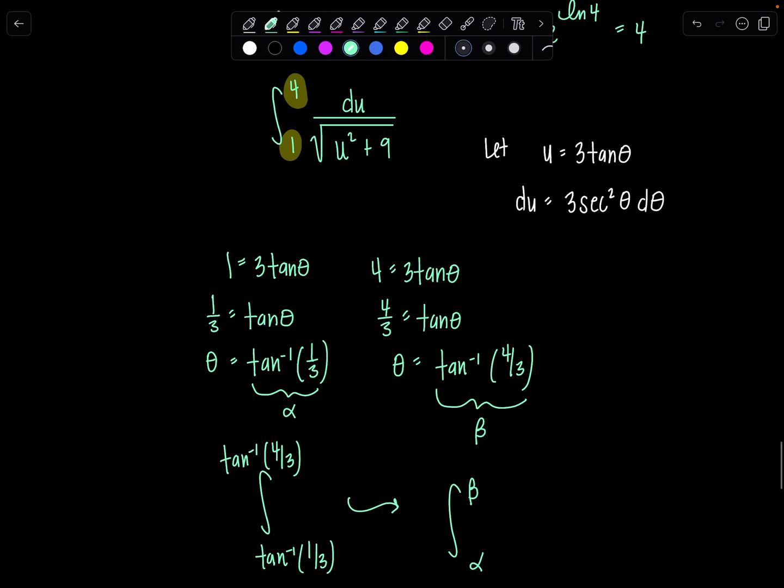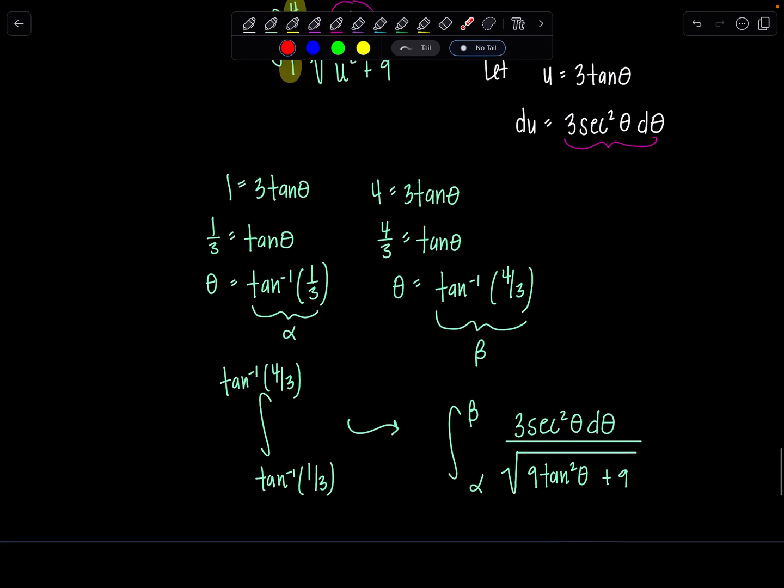Let's see. We've got du in the numerator, that's 3 secant squared theta d theta, over square root u squared plus 9. That would be 3 tan theta squared, so 9 tan squared theta plus 9. Just please double check with your instructor if they'll let you do something like this. I don't want anyone getting in trouble.